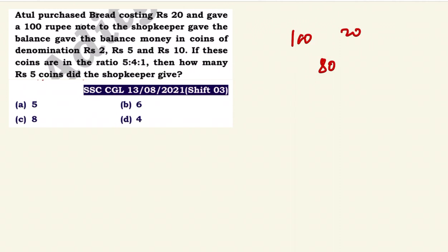We have rupees 2 coins in ratio 5, rupees 5 coins in ratio 4, and rupees 10 coins in ratio 1. So let the number of coins be 5x, 4x, and 1x respectively.